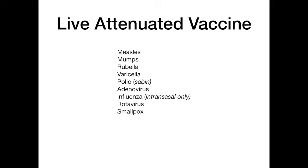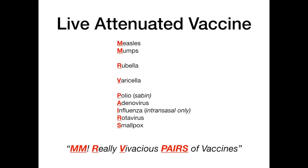It's actually a lot easier than it looks. My mnemonic is: 'MMM, Really Vivacious PAIRS of vaccines.' The reason vivacious works is because vivacious means lively — and this is live attenuated vaccines. So: M and M for measles and mumps, the R in 'really' for the R in rubella, and the V in 'vivacious' for the V in varicella.